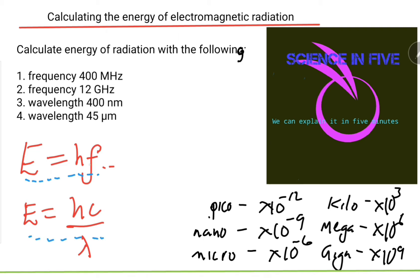E equals hf - you use it when you're given the frequency. E equals hc over lambda - use it when you're given the wavelength.